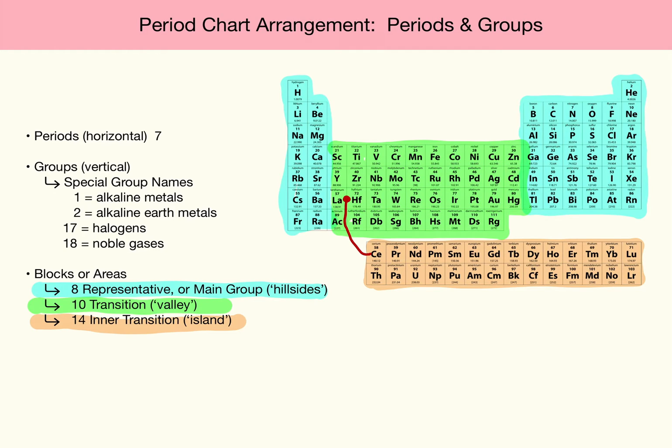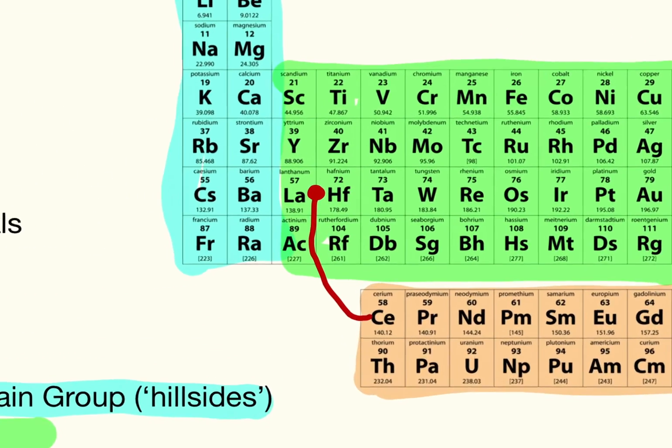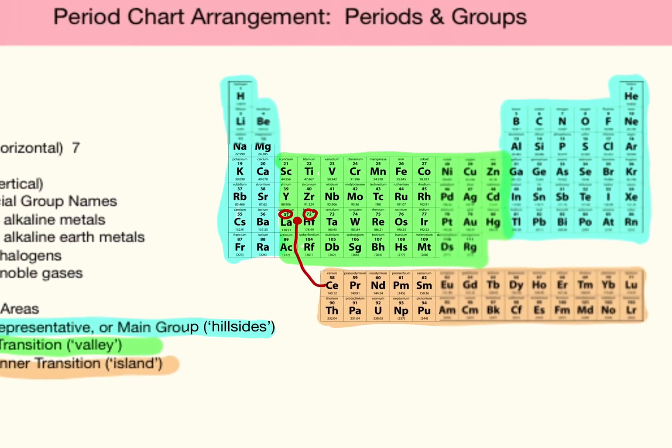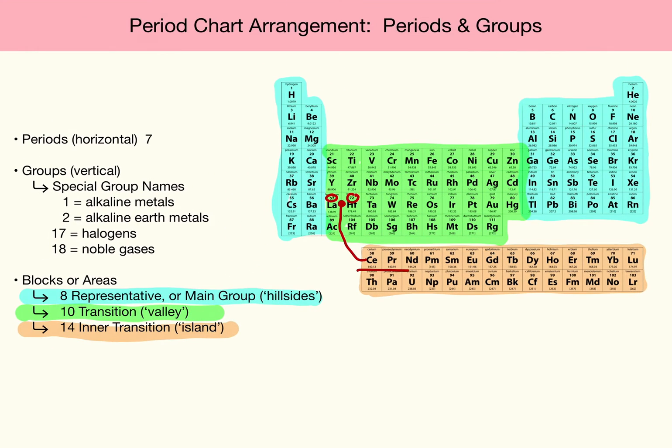So, if you notice, the numbering goes from 57 to 72. Where are the elements in between? That's the Inner Transition. And similarly, this second row is also an Inner Transition.